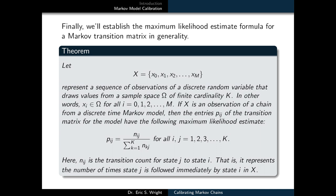If x is an observation of a chain from a discrete time Markov model, then the entries Pij of the transition matrix for the model have the following maximum likelihood estimate. Pij is approximately equal to the corresponding transition count nij, or number of times we observed a transition from state j to state i in our time series, divided by the column sum of transition counts for that particular set of transitions starting at state j.